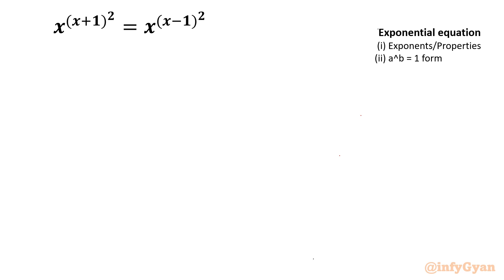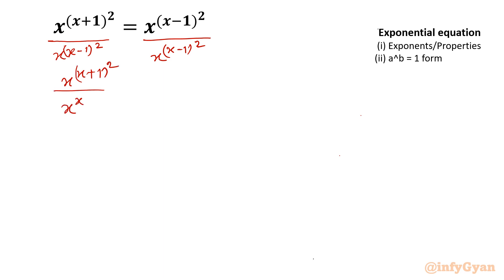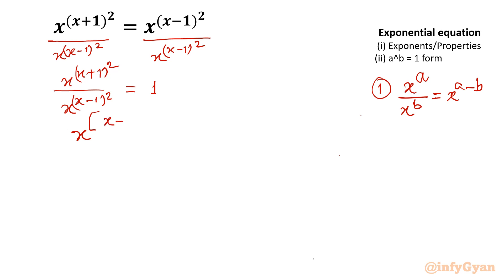I will divide both sides by x^(x-1)², the right-hand side. Once I divide both sides, the equation will be x^(x+1)² divided by x^(x-1)² equal to 1. Using exponent property x^a divided by x^b equals x^(a-b), our equation converts to x^[(x+1)² - (x-1)²] = 1.